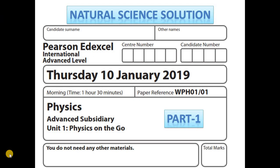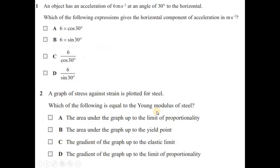Hello, welcome to the video solution for EdXL physics. This is EdXL IEL Physics January 2019 Unit 1. Let's start question number 1: an object has an acceleration of 6 metres per second squared at an angle of 30 degrees to the horizontal.